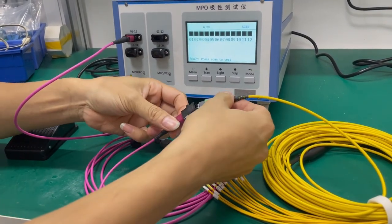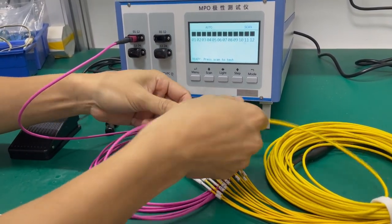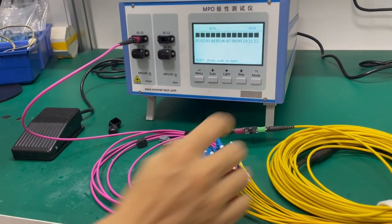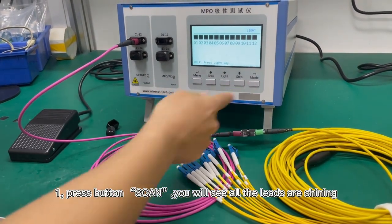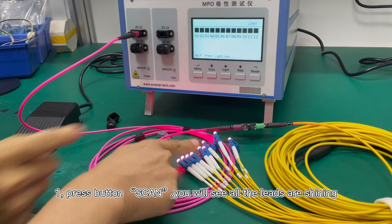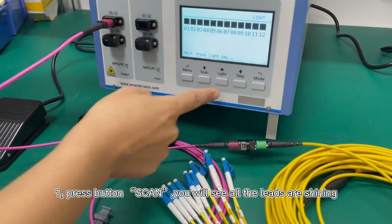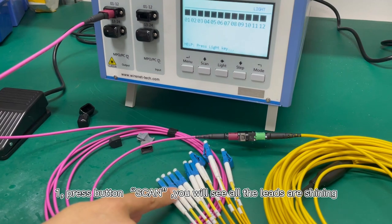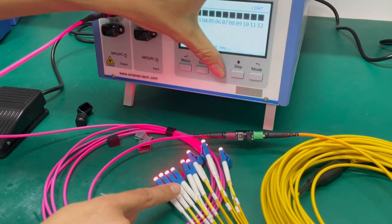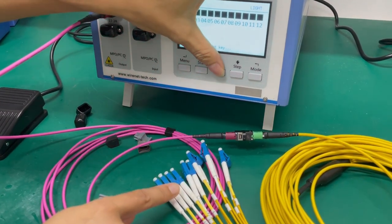When you're connecting, you must be paying attention to the male to connect with female. Now we will press the mode and the light. Once you press the light, it will have a light here.